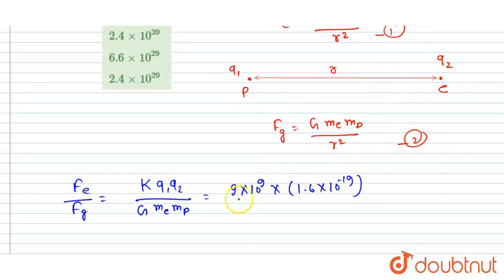G is 6.67 × 10⁻¹¹ and mass of electron is 9 × 10⁻³¹.